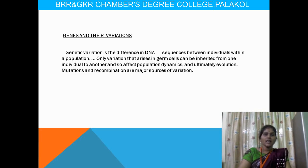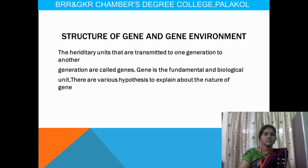In this unit, we will study different types of processes and how genes can get variations and also how genes get similarities during these processes. First we have to know what genes are, and before going to genes, we have a specific topic called the structure of the gene and gene enrollment. The gene is the fundamental biological unit, and different scientists explain different hypotheses about the gene.